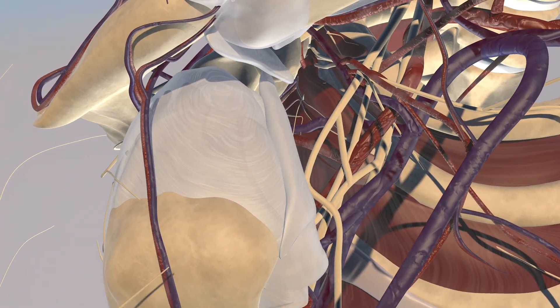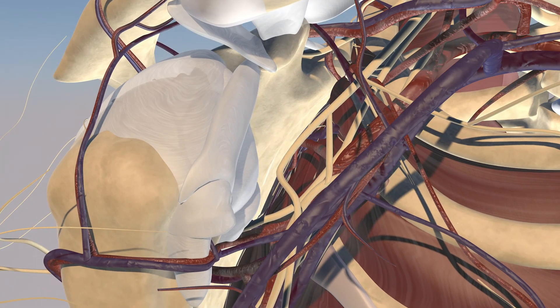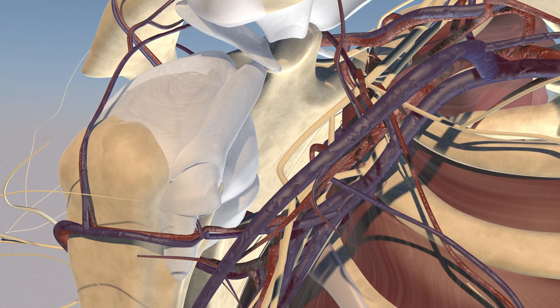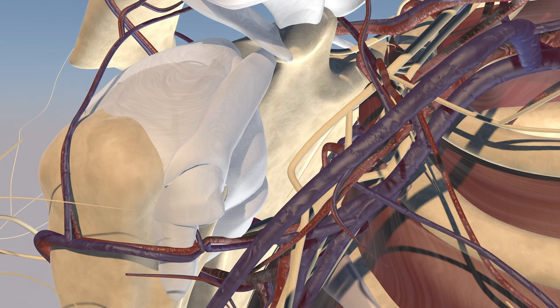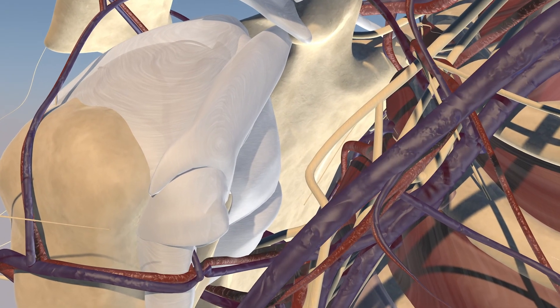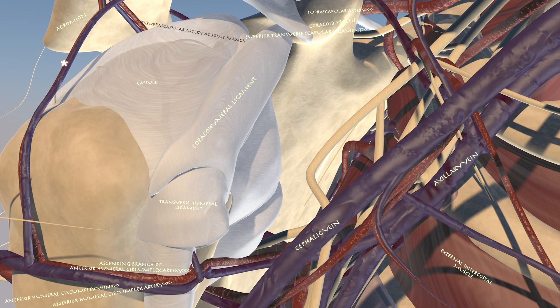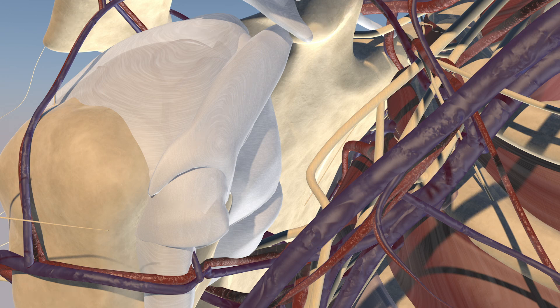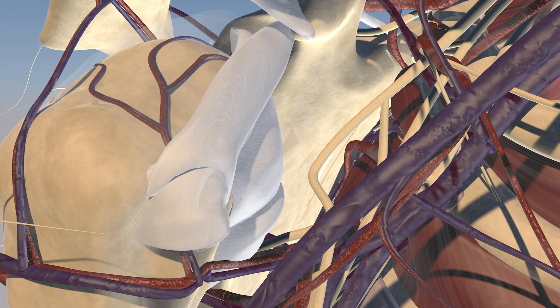Now we're making the scapula solid. You can appreciate the ascending branch of the anterior circumflex humeral artery which feeds the humeral head. Also over the lateral proximal humerus you can appreciate another branch from the anterior circumflex humeral artery that feeds the acromion and merges with the acromial branch of the thoracoacromial artery. You can also appreciate the posterior humeral circumflex artery merging with the anterior humeral circumflex artery.